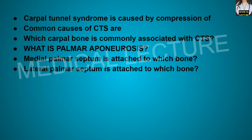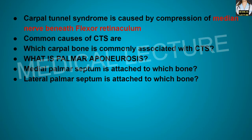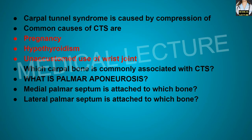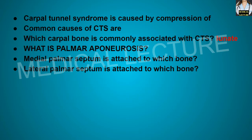Carpal tunnel syndrome is caused by compression of the median nerve beneath the flexor retinaculum. What are the common causes of carpal tunnel syndrome? It can be pregnancy, hypothyroidism, or accustomed use of the wrist joint. Which carpal bone is commonly associated with carpal tunnel syndrome? The lunate bone.